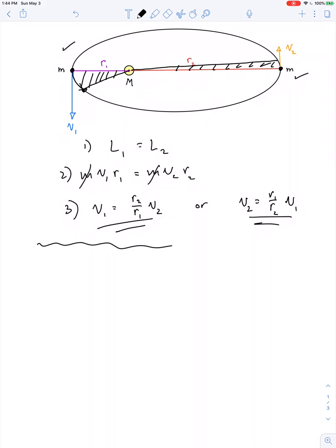Not only is angular momentum conserved, but energy is conserved. The sum of potential and kinetic energies have to be equal at positions 1 and 2.